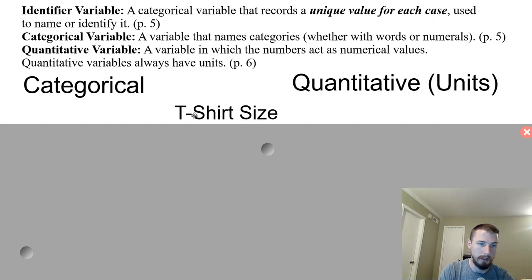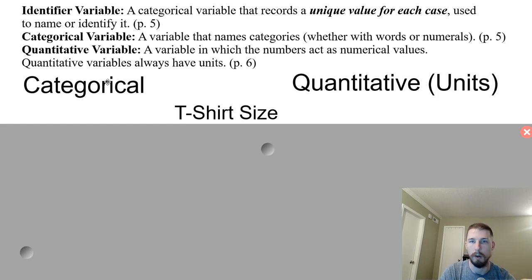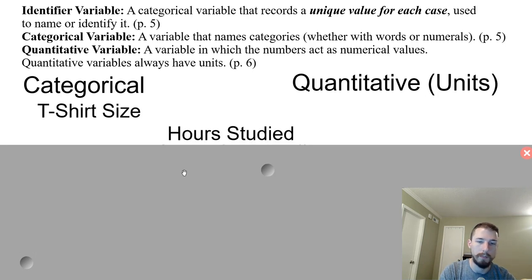Let's play a game: is it categorical or quantitative? T-shirt size — small, medium, large, extra large — are we sorting them into bins or dealing with units? In this case, we're sorting them out, so that would be categorical.